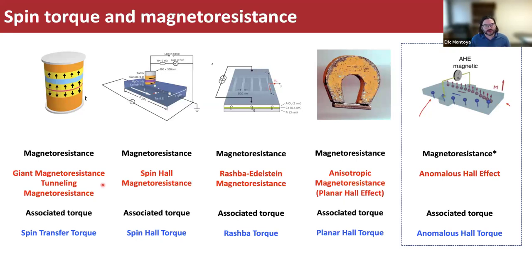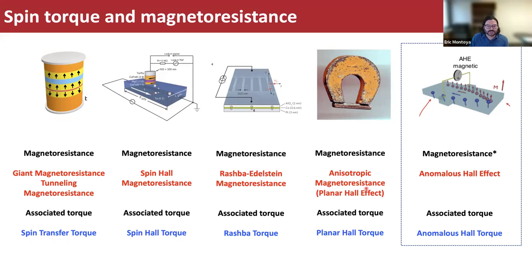Spin torques and magnetoresistances are intrinsically related. For each discovered magnetoresistance, there's an associated spin torque, or vice versa. We had giant magnetoresistance and tunneling magnetoresistance, and a few years later the associated spin transfer torque was theoretically predicted and then discovered. Then the spin hall torque was discovered, then spin hall magnetoresistance, and so on — Rashba torque, Rashba-Edelstein magnetoresistance. The oldest known magnetoresistance, the anisotropic magnetoresistance, has the same effect as the planar hall effect, and the associated torque is the planar hall torque.